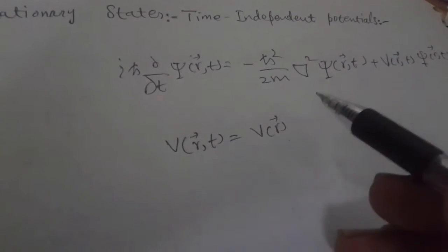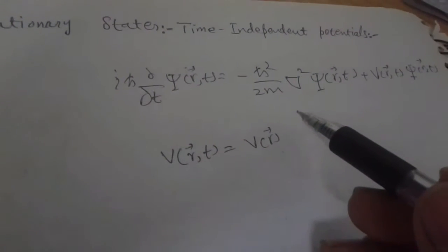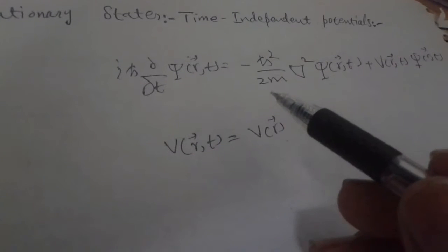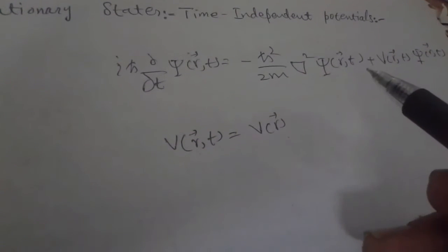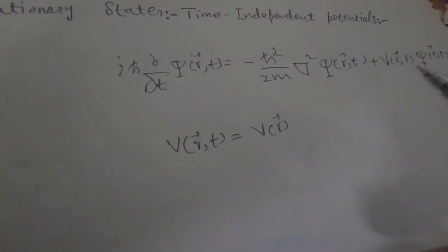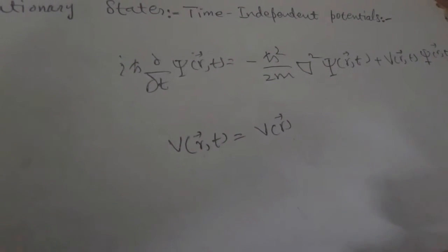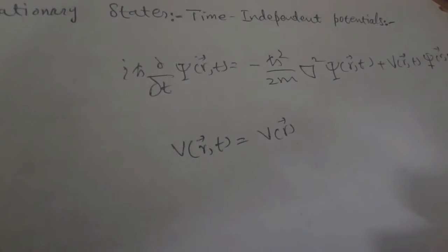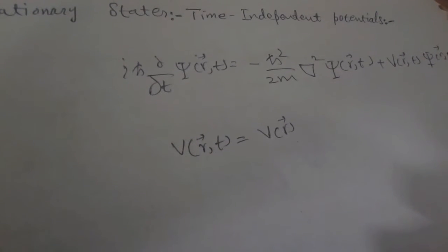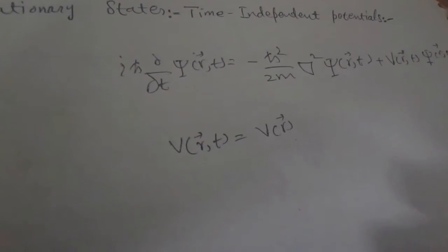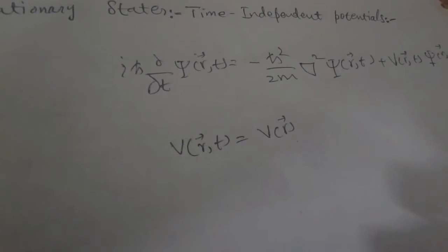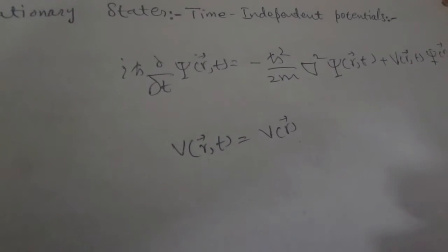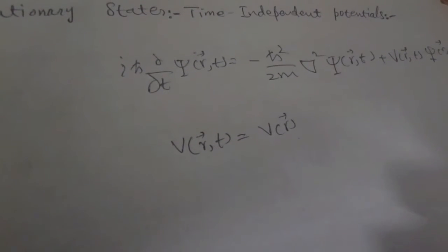Since the potential is independent of time, the Hamiltonian which is involved in this equation will also depend only on the value of r instead of time t. So the Hamiltonian is also time-independent, as the potential is also time-independent.